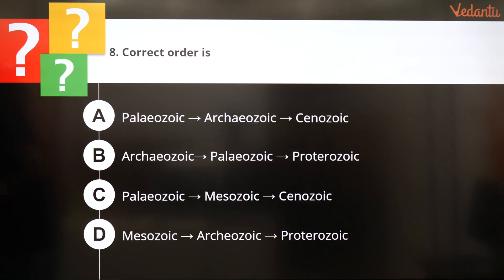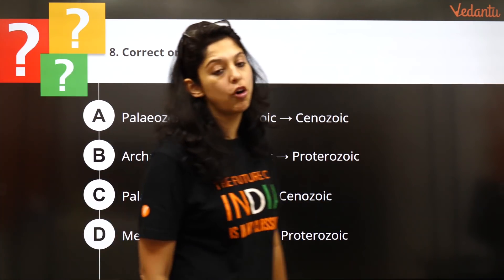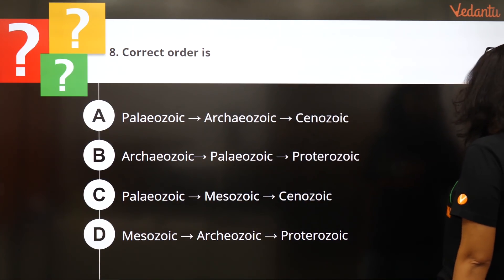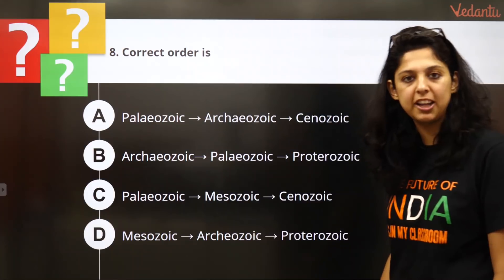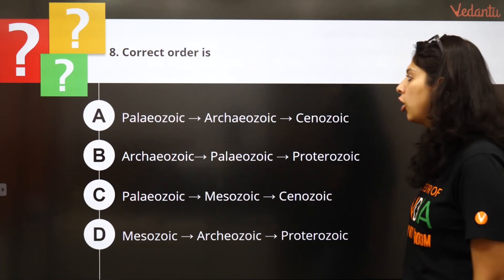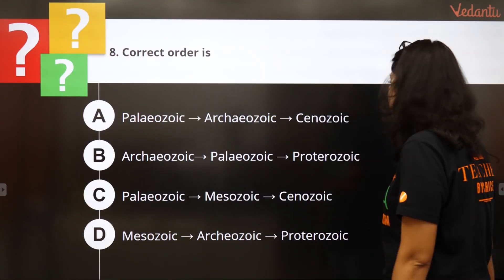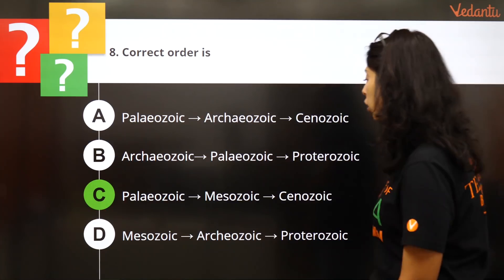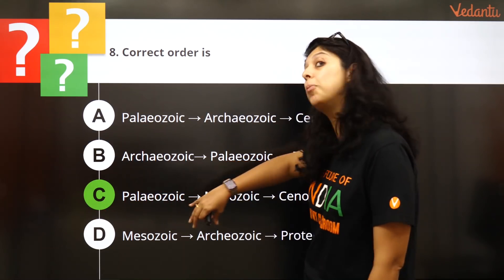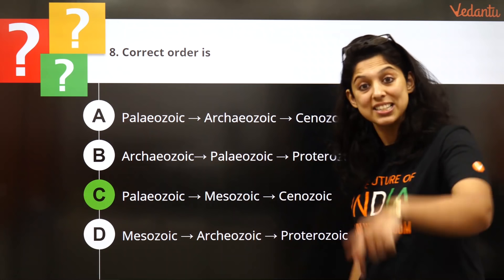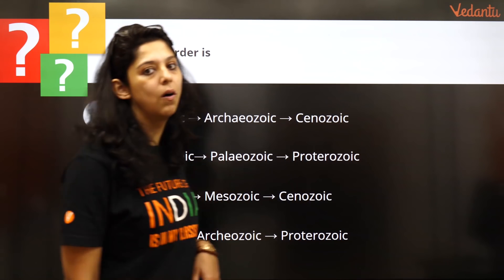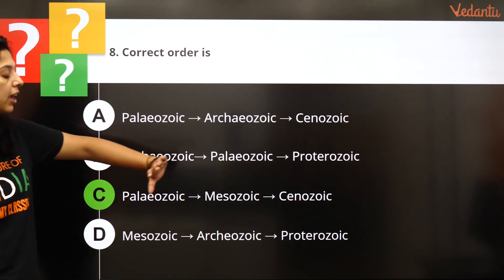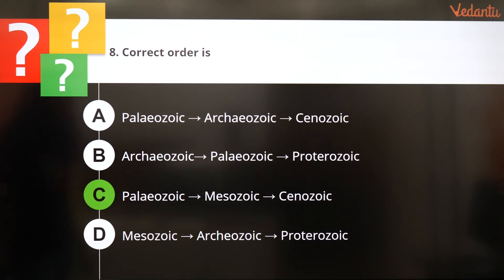A very, very important question — what is the correct order of geological eras? There are many questions on eras in exams. The correct order is Paleozoic, Mesozoic, Cenozoic.